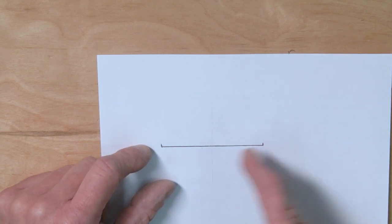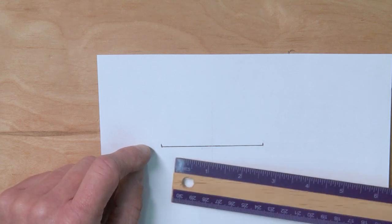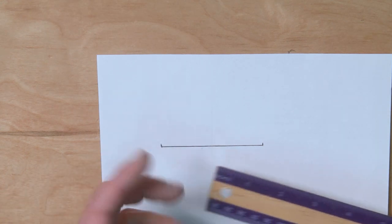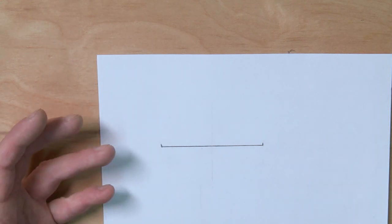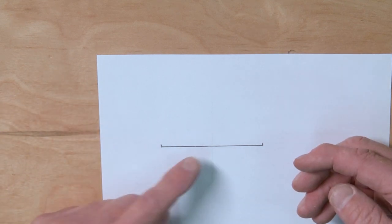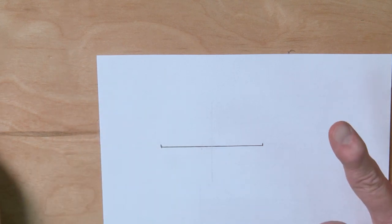But the first thing I want to do is I want to divide this in half. Now yes, you could use a ruler to measure this, but if your measurement is kind of an odd length that might be a little bit difficult to figure out what the middle of that is by doing the math. So the geometry is very simple.